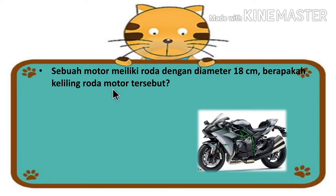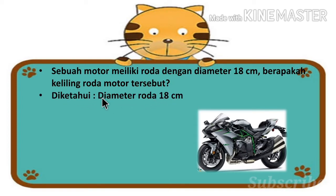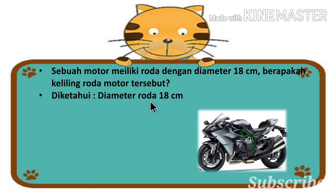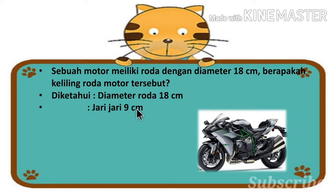Untuk menjawab soal seperti ini, kita tentukan terlebih dahulu diketahuinya dari soal tersebut. Diketahuinya adalah sebuah roda memiliki diameter 18 cm. Berapakah jari-jarinya? Karena jari-jari merupakan setengah dari diameter, maka jari-jarinya adalah 18 dibagi 2 sama dengan 9 cm.